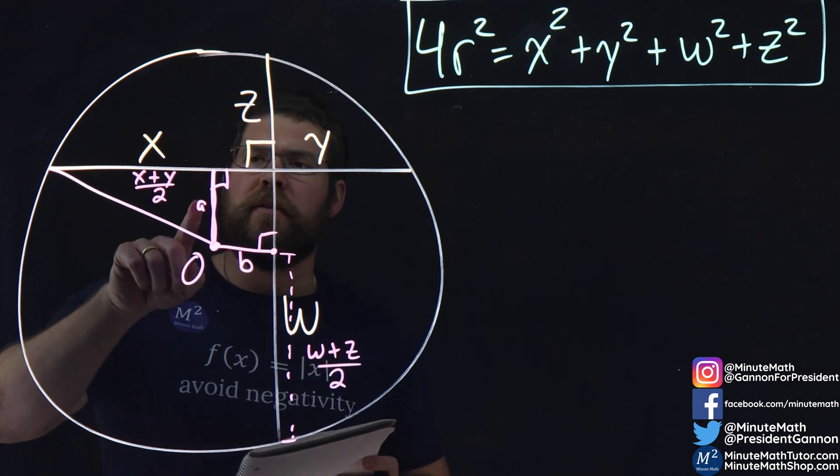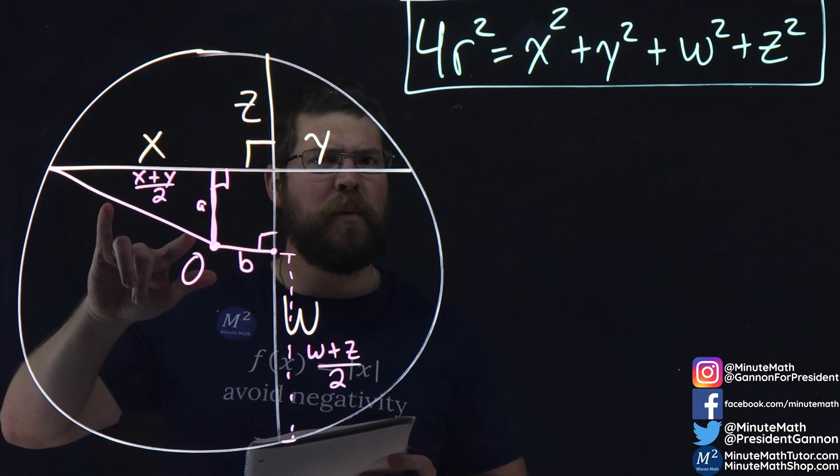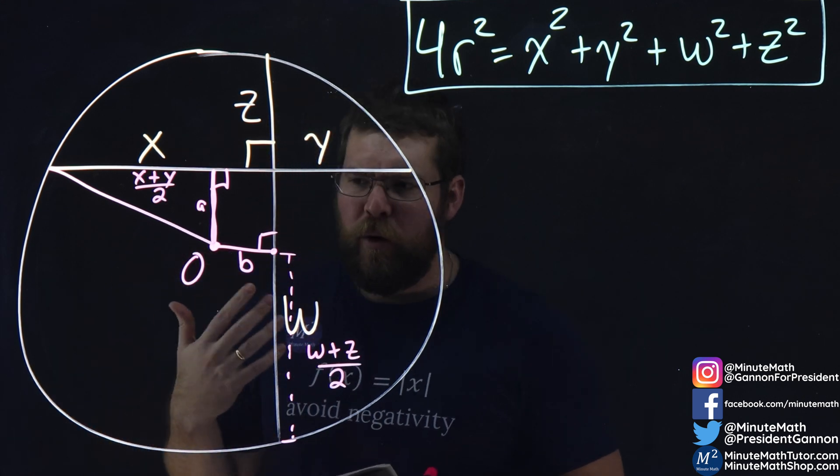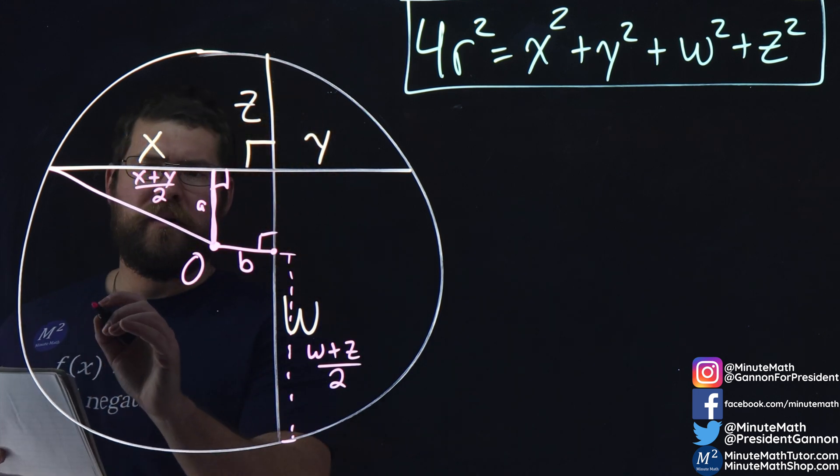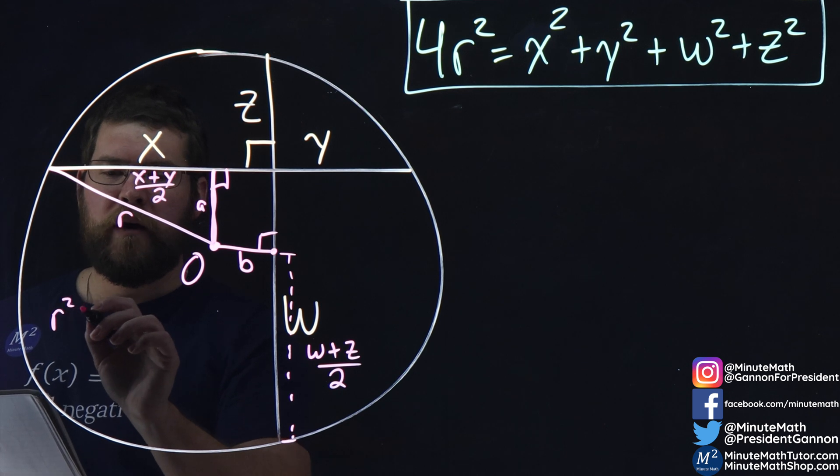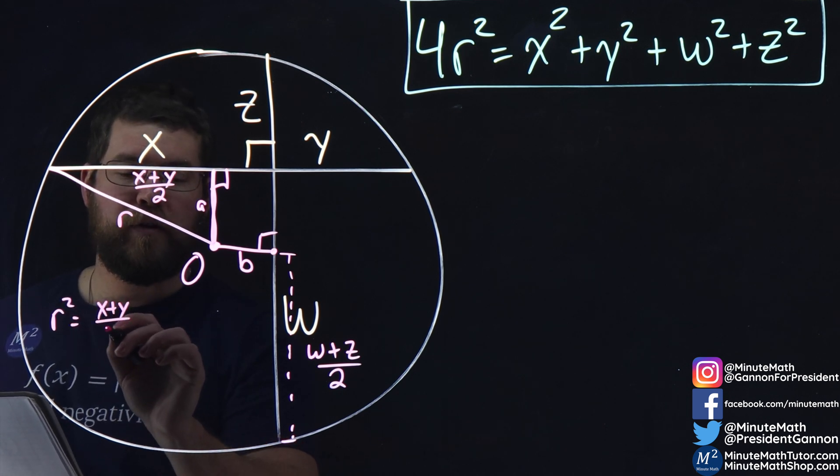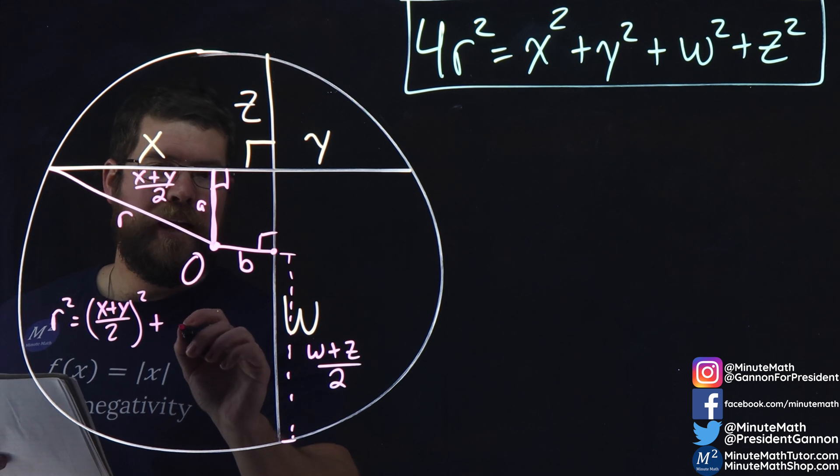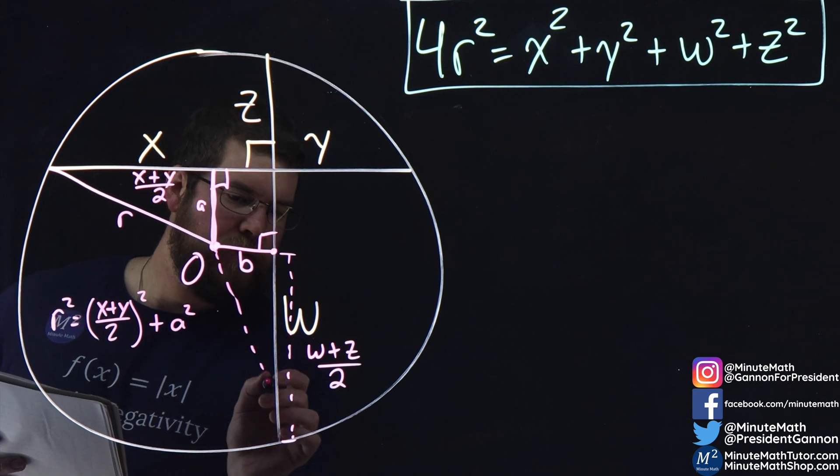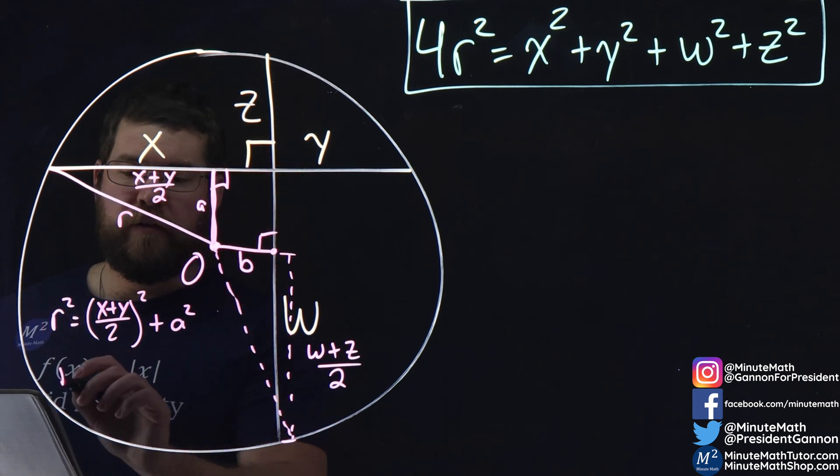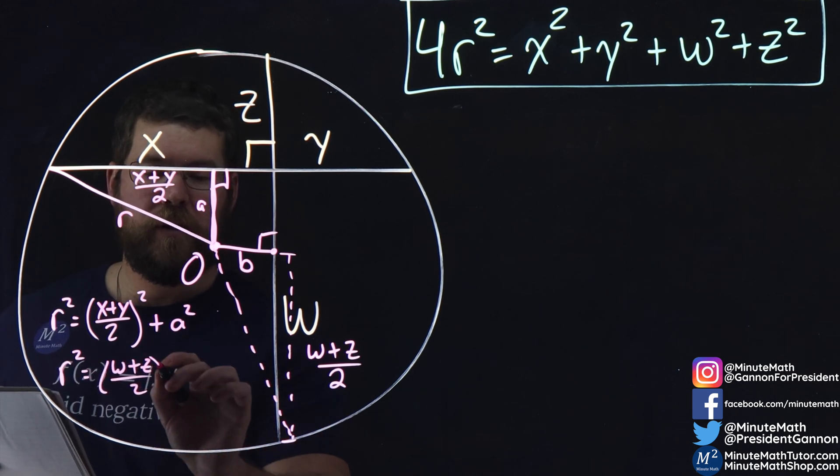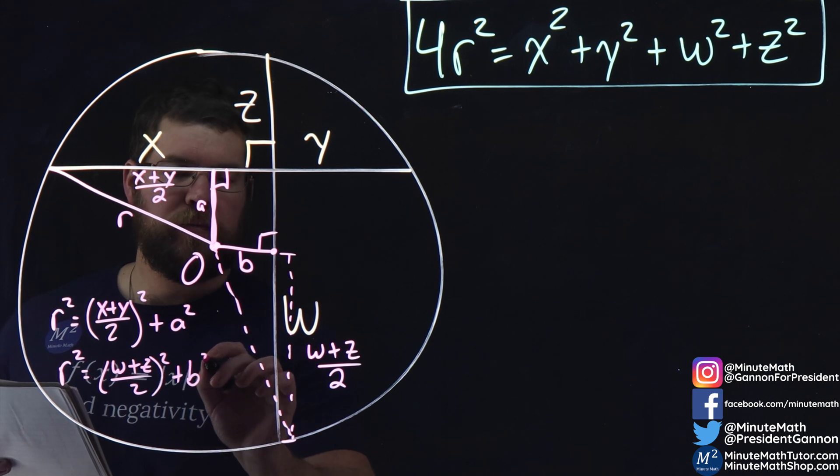What do we know about the length of our radius? How can we write this in terms of (x + y)/2 and a? Well, the Pythagorean theorem tells us that our hypotenuse, r², is equal to [(x + y)/2]² + a². The same idea, that radius squared is equal to [(w + z)/2]² + b².